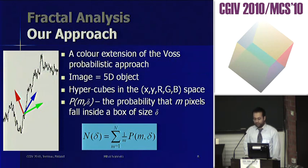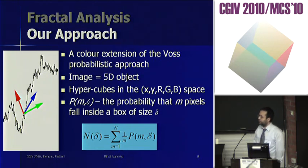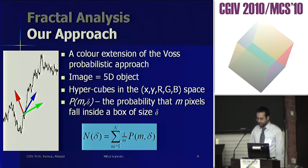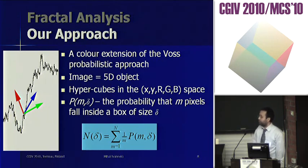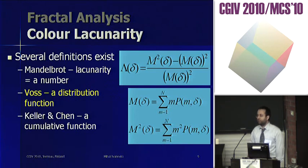Our approach considers the image to be a five-dimensional object with two spatial coordinates x and y and three color coordinates, for example RGB. We extended the probabilistic approach of Richard Voss for estimating the fractal dimension. Instead of boxes we use hyper-boxes of dimension five to cover the color image. The method estimates the probability matrix P(m, delta), which is the probability that m pixels will fall inside a box of size delta. Then N(delta) is computed from this probability matrix, allowing estimation of the fractal dimension.